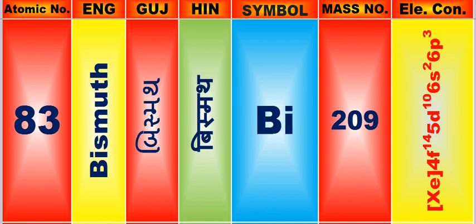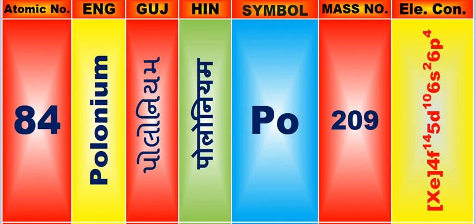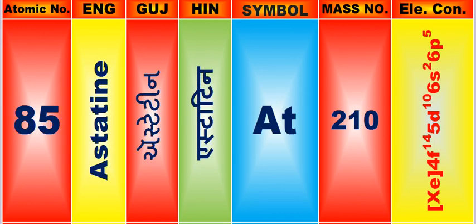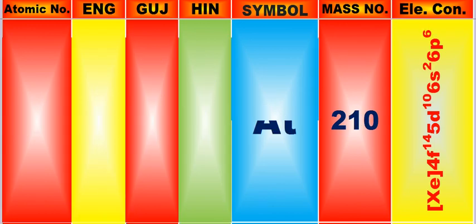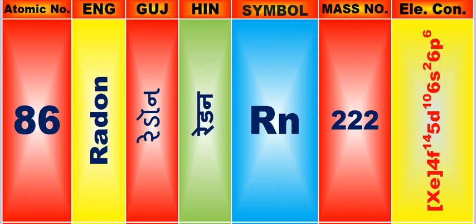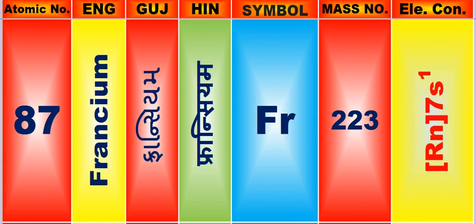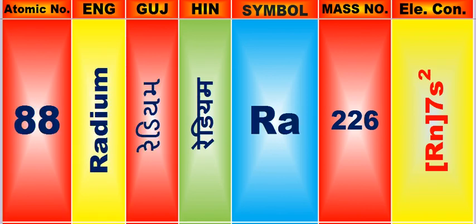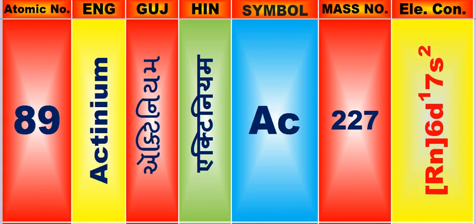Atomic number is 83, name of atom is Bismuth. Atomic number is 84, name of atom is Polonium. Atomic number is 85, name of atom is Astatine. Atomic number is 86, name of atom is Radon. Atomic number is 87, name of atom is Francium. Atomic number is 88, name of atom is Radium. Atomic number is 89, name of atom is Actinium.